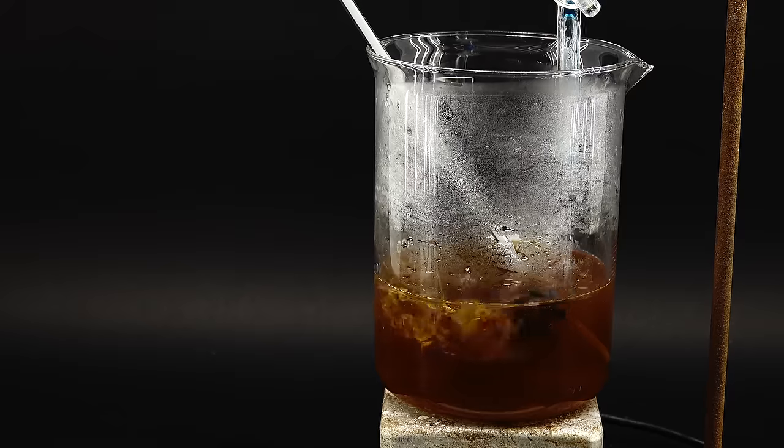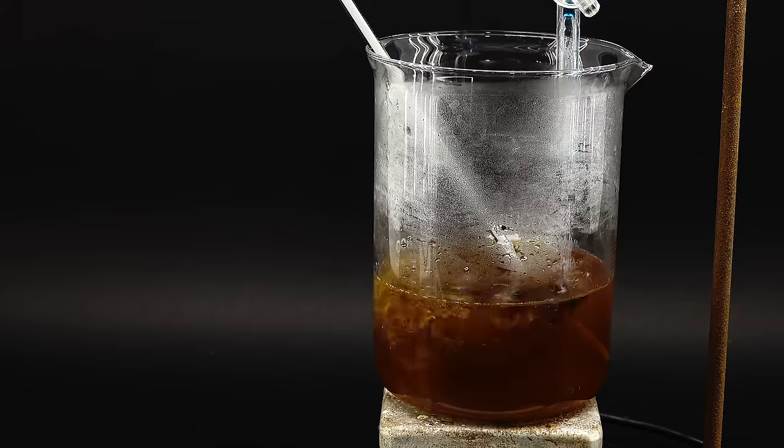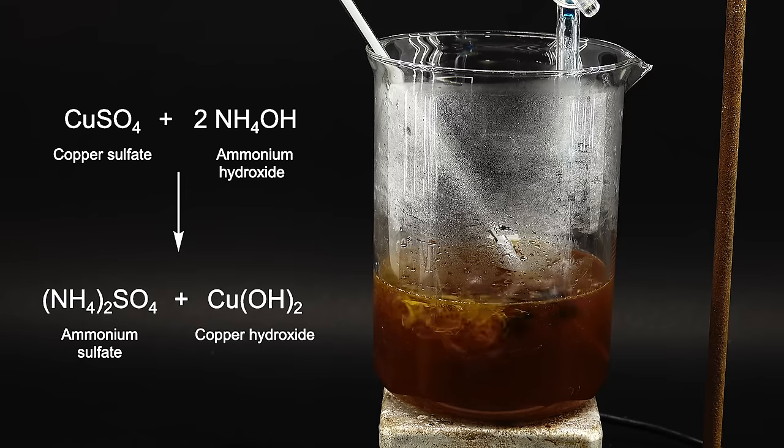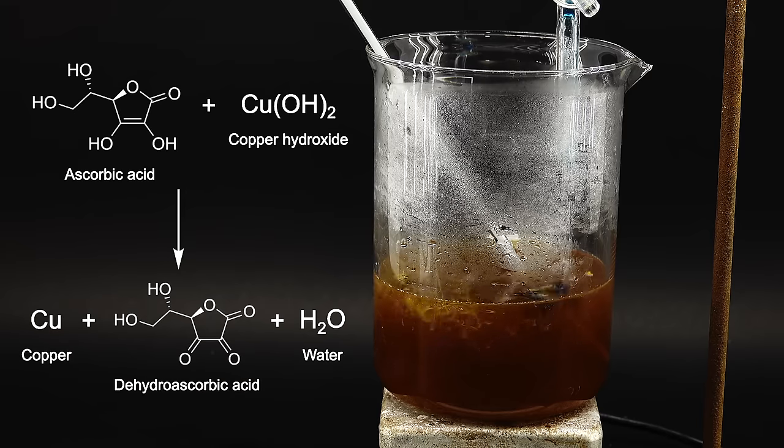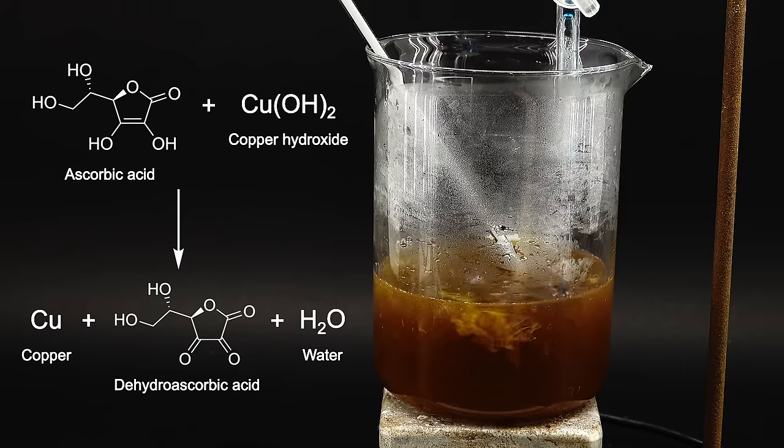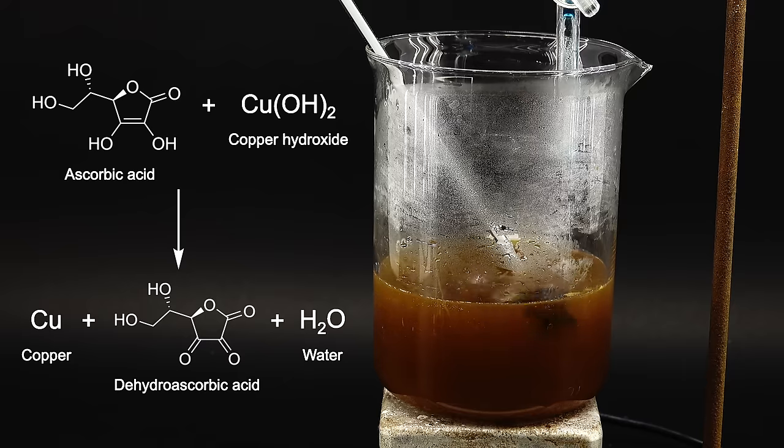In terms of what's happening here on a chemical level, first, copper sulfate reacts with ammonia, forming copper hydroxide and ammonium sulfate, then the ascorbic acid, which under these conditions is a strong reducing agent, reduces the copper hydroxide to metallic copper, itself becoming the hydroascorbic acid, which is its oxidized form, and you can think of it as vitamin C on retirement.